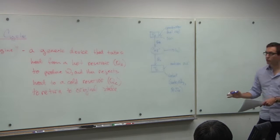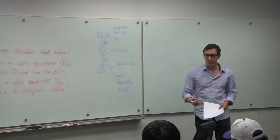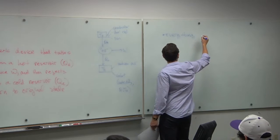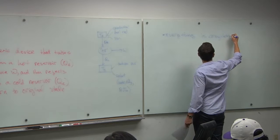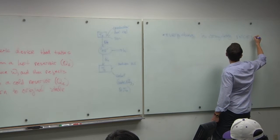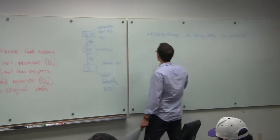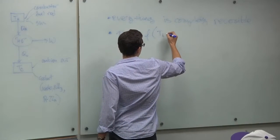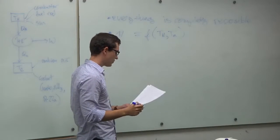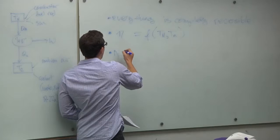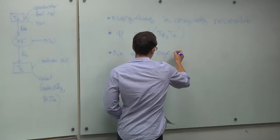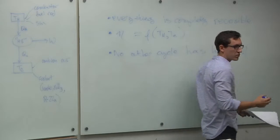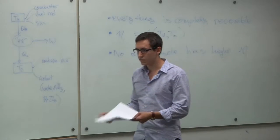Using this idea, Carnot created sort of a way of generalizing heat engines. What he said is, okay, let's assume that everything is reversible. Completely reversible. What we're going to see is that the efficiency is only a function of the hot temperature and the cold temperature. What we're also going to see is no other cycle has higher efficiency. So you can think of Carnot as being like the upper limit on the efficiency of a system.